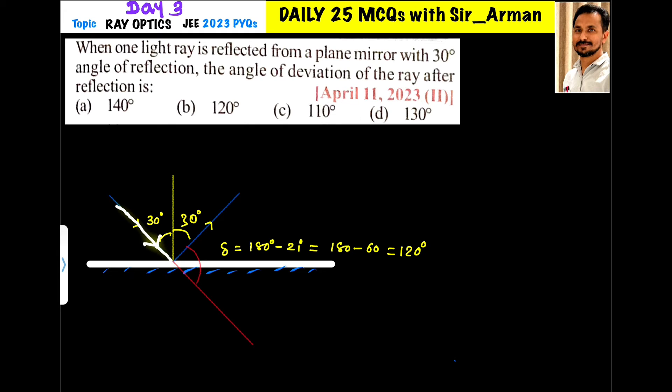So this is my direction of the incident ray. It is actually going in this direction, but due to reflection it rebounds in this direction. Now we know that the angle of incidence and angle of reflection are the same, so this becomes 30 plus 30, which is 60.